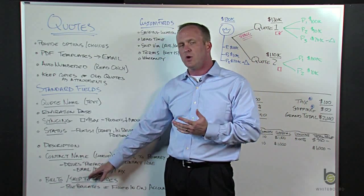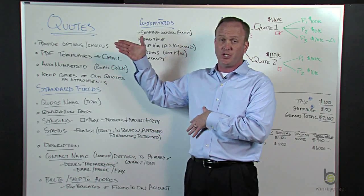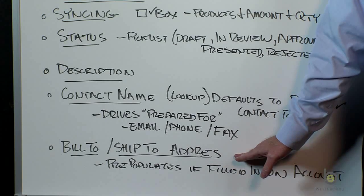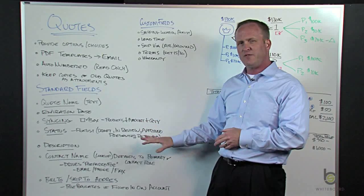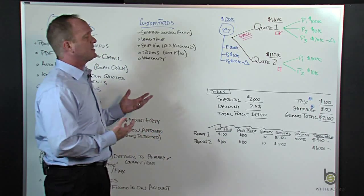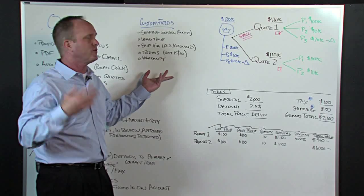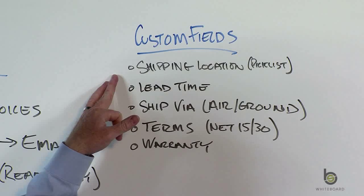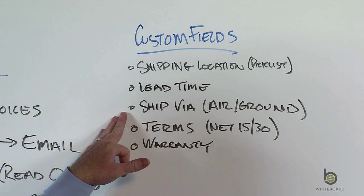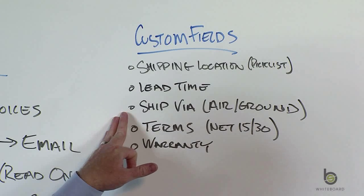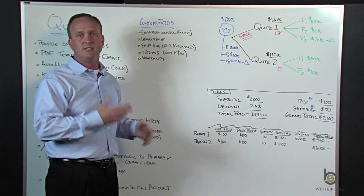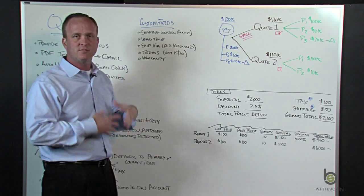Those are the standard fields. Let's hit a couple of potential custom fields. Quotes have page layouts, record types, and support custom fields — it's a standard object. Some custom fields to consider for your organization: a custom picklist for shipping location, such as Dallas warehouse or New Orleans warehouse; lead time — two weeks, three weeks — to give the client an idea of fulfillment time; a ship via picklist — shipping by air, by ground, by carrier or courier; payment terms — net 30, net 15; and maybe a warranty field — as-is, 30 days, one year. So you can add custom fields to quotes.